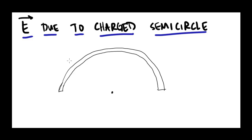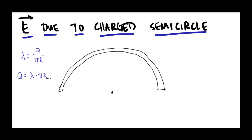We're going to approach this the same way we did before. But before I start the math, let's recognize what it means to say this is a uniform charge distribution. We've got some charge density lambda, and that's the amount of charge in Coulombs Q divided by this length — since it's a semi-circle it's not 2πr, it's just πr, half a circle. So I can rearrange this and say Q equals lambda times πr.